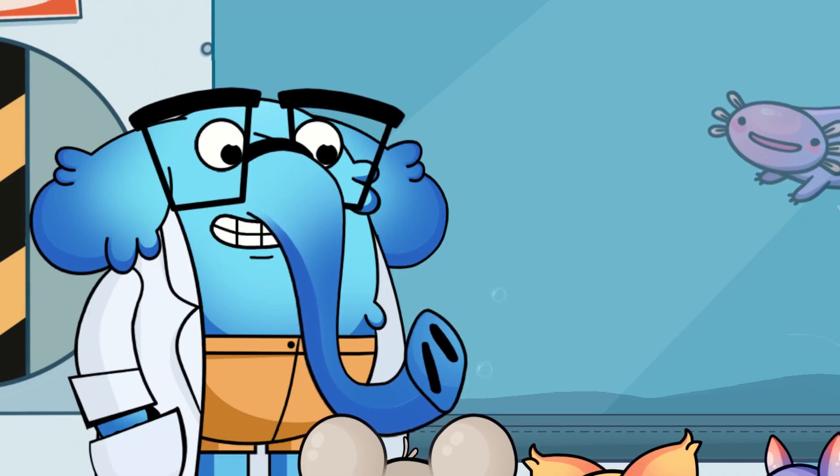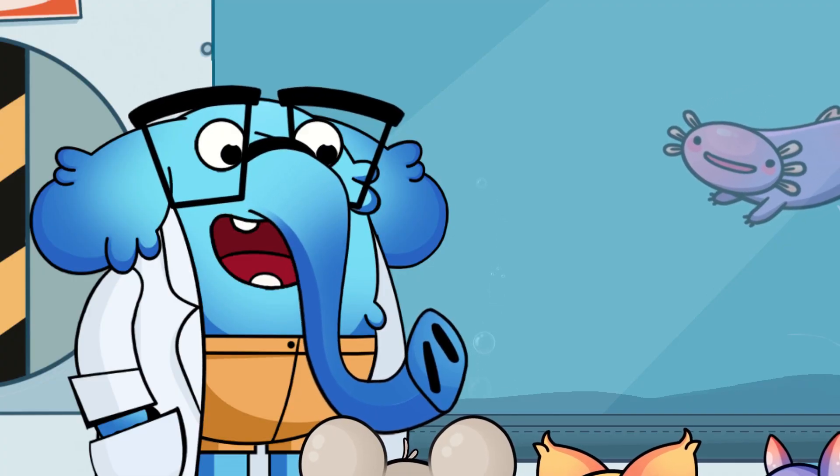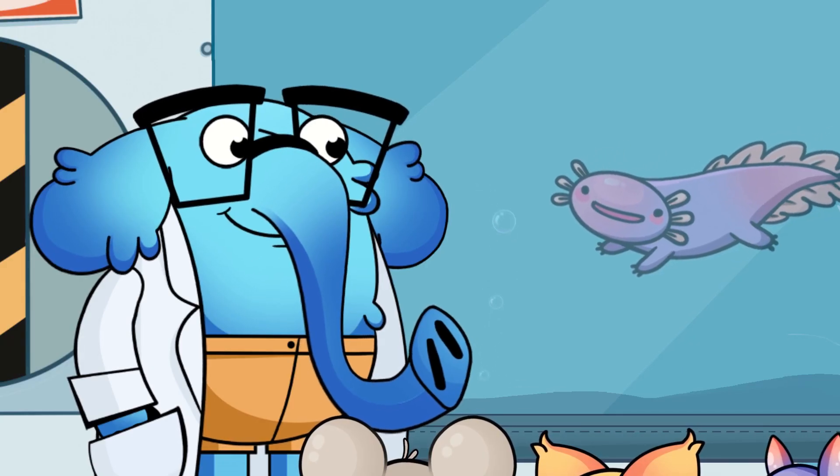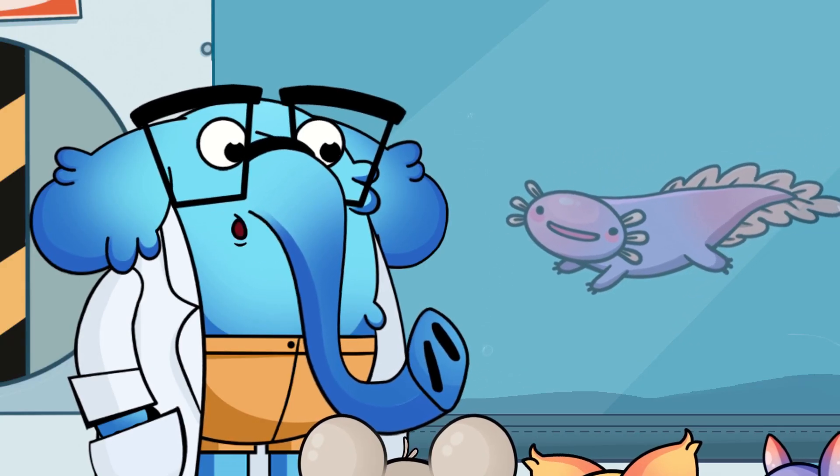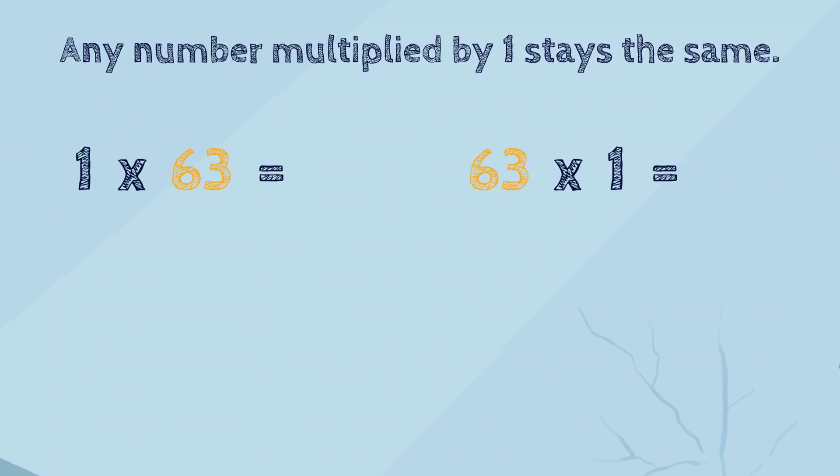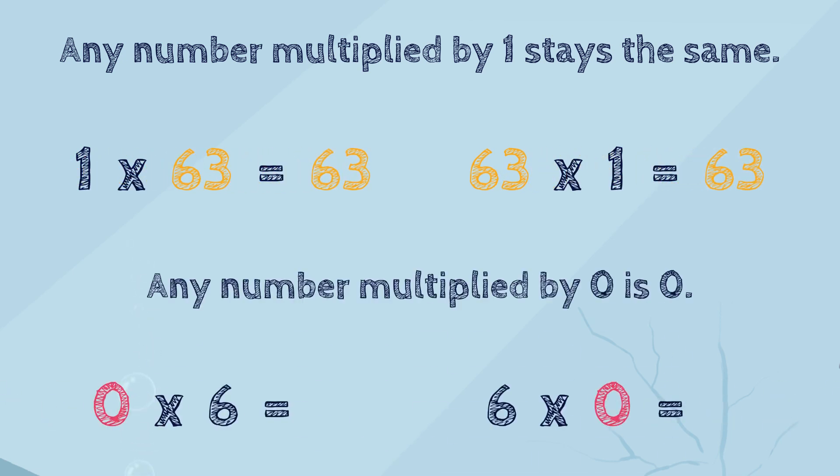So, kids, what is a million times zero? Zero! That's right. Let's repeat the tricks that we've learned today. The first trick is that any number multiplied by one stays the same. The second trick is that any number multiplied by zero makes zero.